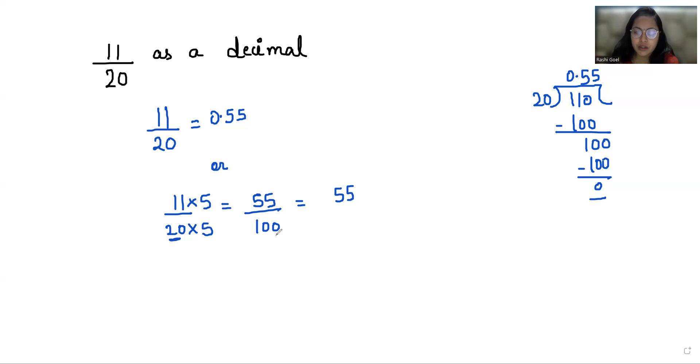Now we have to put the decimal before the number of zeros given in denominator. So there are two zeros in denominator, so we'll put before two places the decimal. The answer is 0.55.